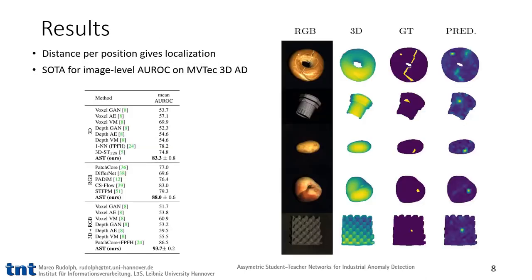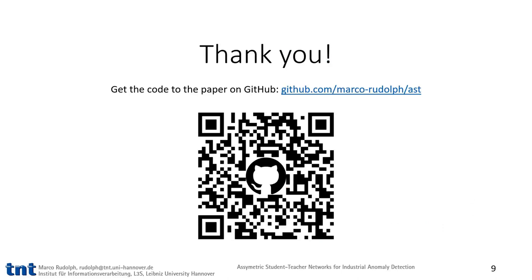The anomalies can be localized by visualizing the distance for every spatial position. On the right, we can see a visualization of this map, which is pretty close to the ground truth annotations of the dataset MBTAC3DAD. On the left, we report quantitative results for this dataset. We set a new state-of-the-art on all data domains, having a large margin to past work. Thank you for your interest in our research. Code is available on GitHub.